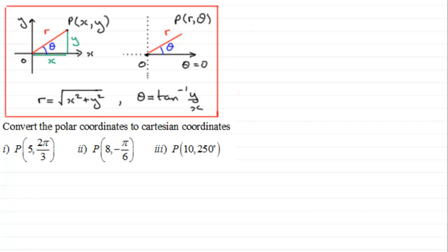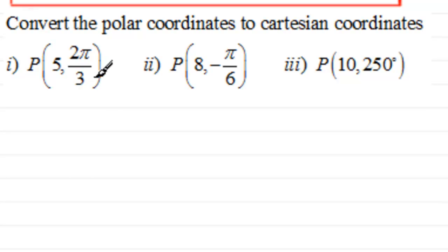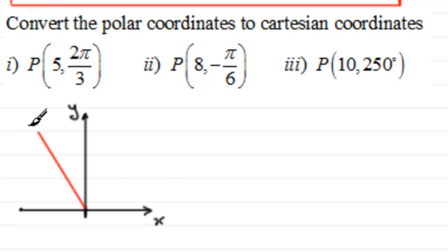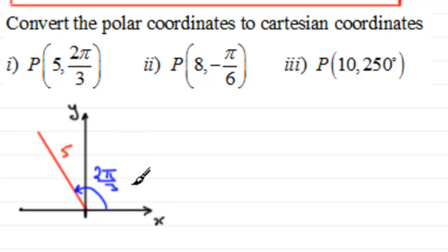Okay, let's see how you got on. The first one is the point P with polar coordinates 5 and 2π/3. To convert this to Cartesian coordinates, I'd sketch a graph with our x-axis and y-axis. We have polar coordinate P which is five units from the origin, and the angle is 2π/3 radians, turning in an anti-clockwise sense because it's positive.